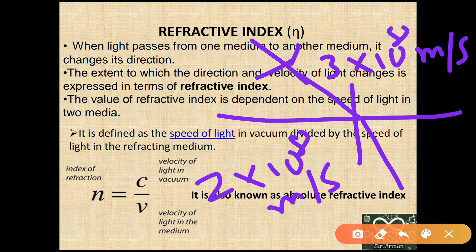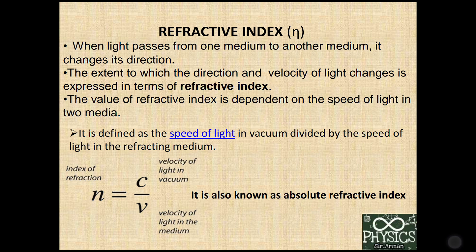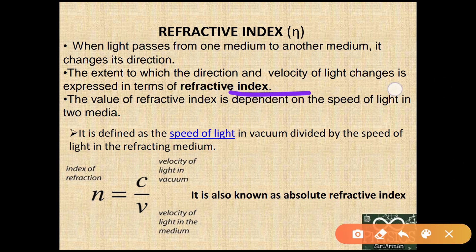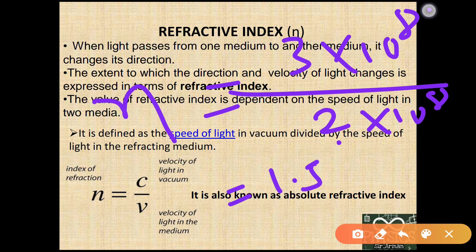The extent to which the direction and velocity of light changes is expressed in terms of refractive index. In this example, the speed of light in vacuum was 3×10⁸ and in glass it is 2×10⁸. If you take the ratio of these two speeds, you get the refractive index — that is 1.5. This means the speed of light decreases by 1.5 times when it enters glass.